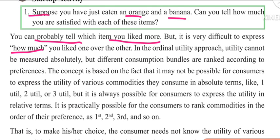In the ordinal utility approach, utility cannot be measured absolutely. According to ordinalists, utility cannot be measured absolutely — you cannot assign a specific numeric value to satisfaction in absolute terms.